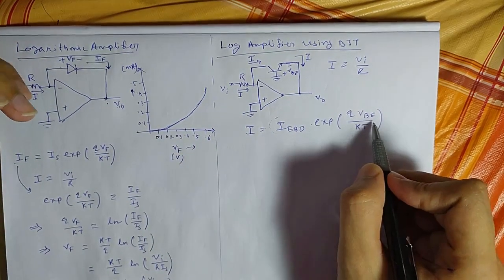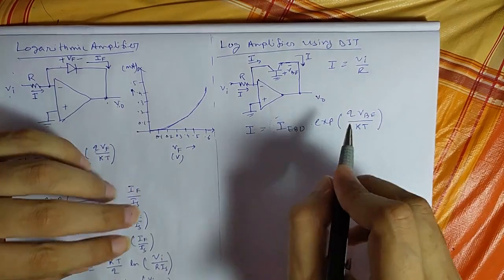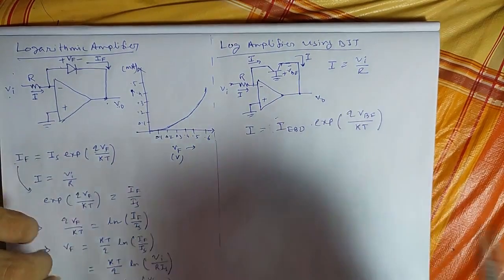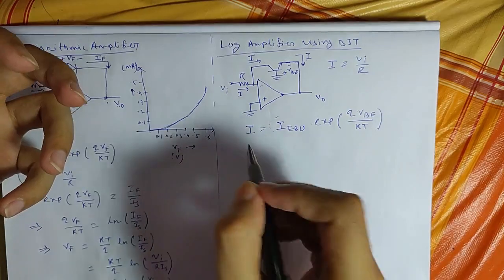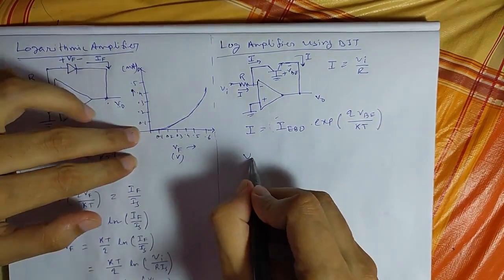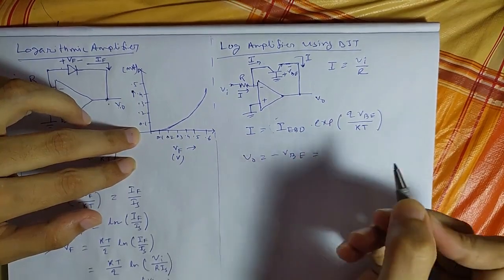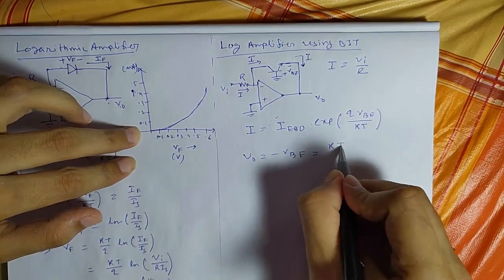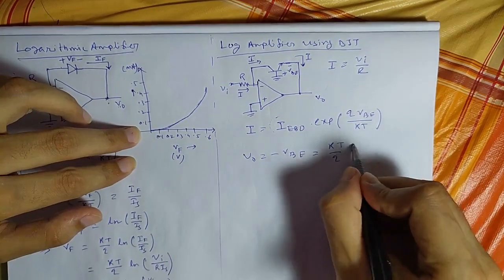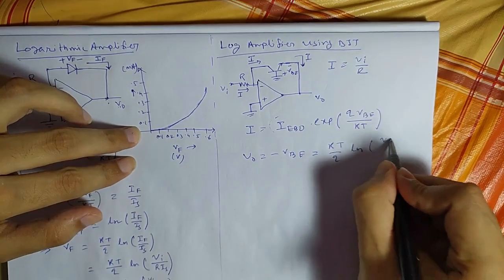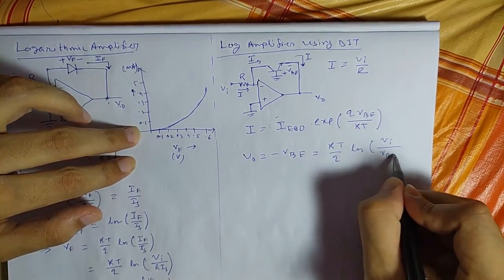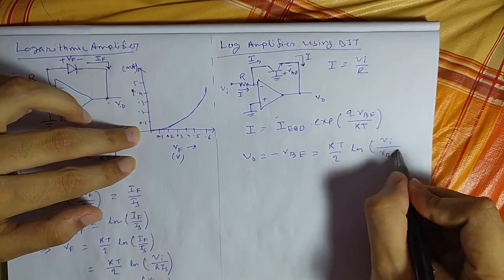From this you can get the similar kind of expression like V0 will be minus VBE equals KT by Q, natural log of I divided by IEbo into R.